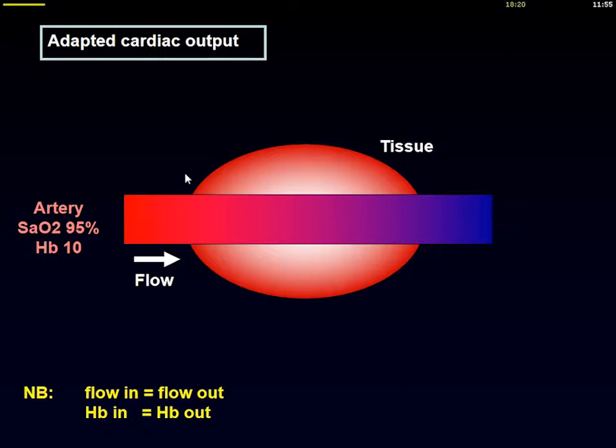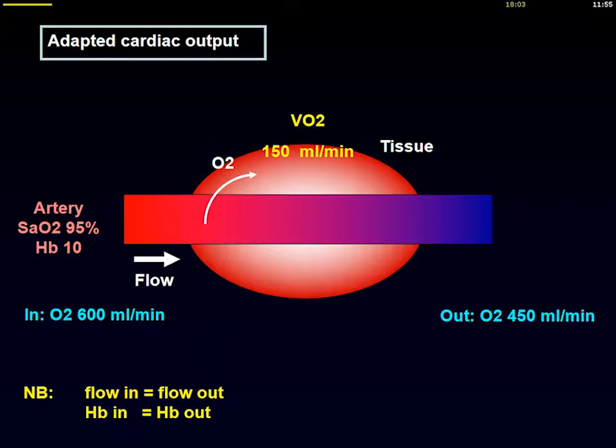To remember this, consider a piece of tissue that receives some amount of oxygen, which is determined by the flow entering this piece of tissue, the hemoglobin content, and the saturation of this hemoglobin. Some oxygen is consumed by this piece of tissue, and we can compute the mixed venous oxygen saturation as a ratio between what is going out and what's going in.